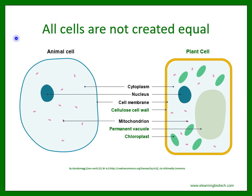Let's take a look at a sketch comparing an animal cell and a plant cell. Both have a cytoplasm, a nucleus, a cell membrane, and mitochondria. The main differences concern the presence of a cell wall, a vacuole, and chloroplasts in the plant cell.